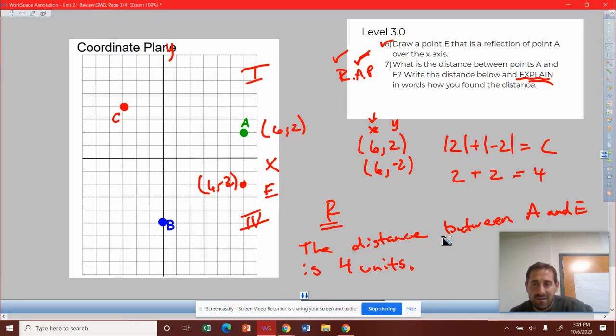using my distance equation with absolute value, by noticing that the x-coordinates were the same, that I need to find the distance between the y-coordinates. And I used my absolute value formula and calculated the distance between my y-coordinates to be 4.